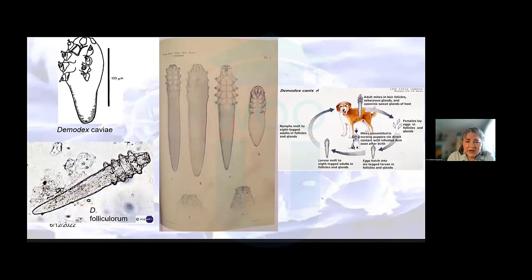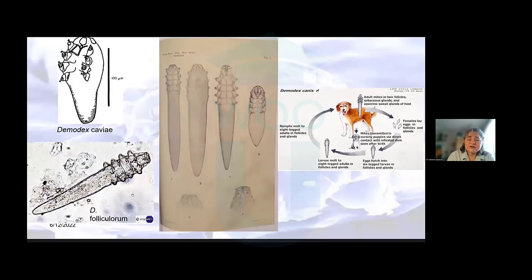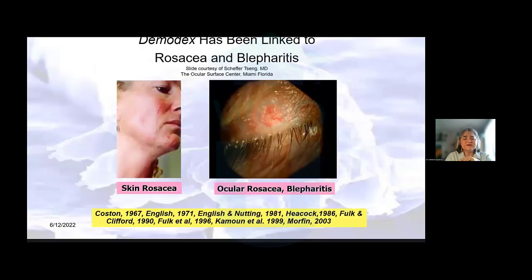We have mites that do similar things to other mammals. If I look over here to the left, we see demodex cavi, which is a demodex of a guinea pig, in comparison to the folliculorum of its human host. So we have demodex mange in dogs — how does this impact humans? Well, demodex mites have been associated with rosacea and with blepharitis.